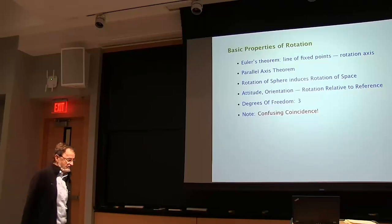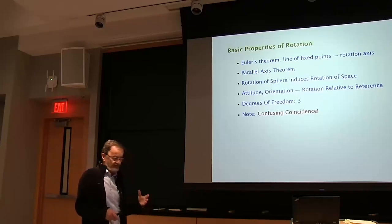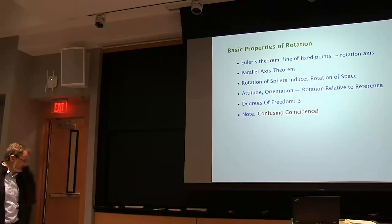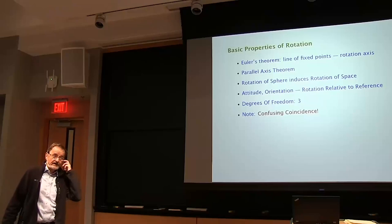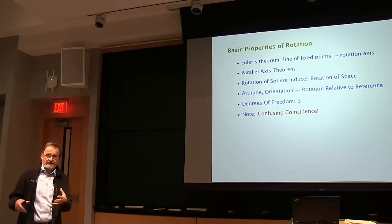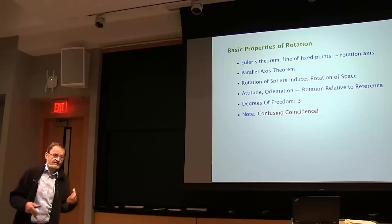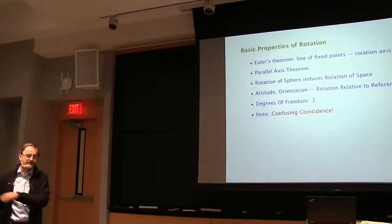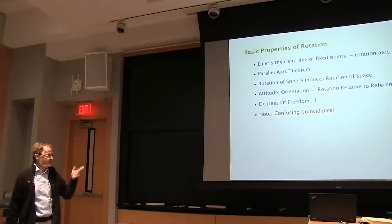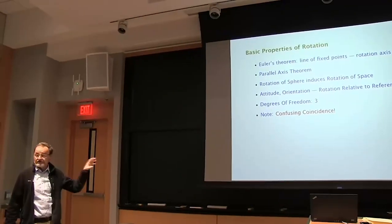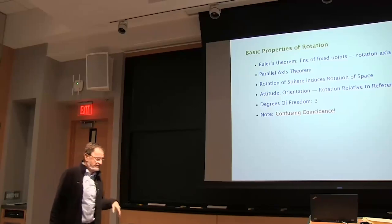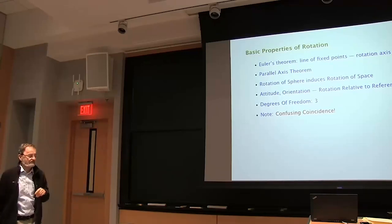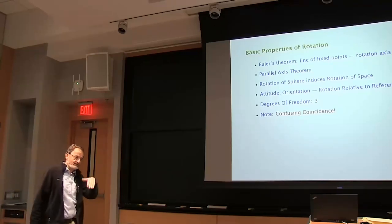When we talk about attitude, we basically mean orientation relative to some standard. For example, we might have models in some preferred coordinate system, and when we talk about locating that object, we're talking about finding its position in space and finding its rotation relative to that reference rotation. By the way, this whole presentation is going to be on Stellar, along with a four-page summary of everything you need for this course about quaternions.